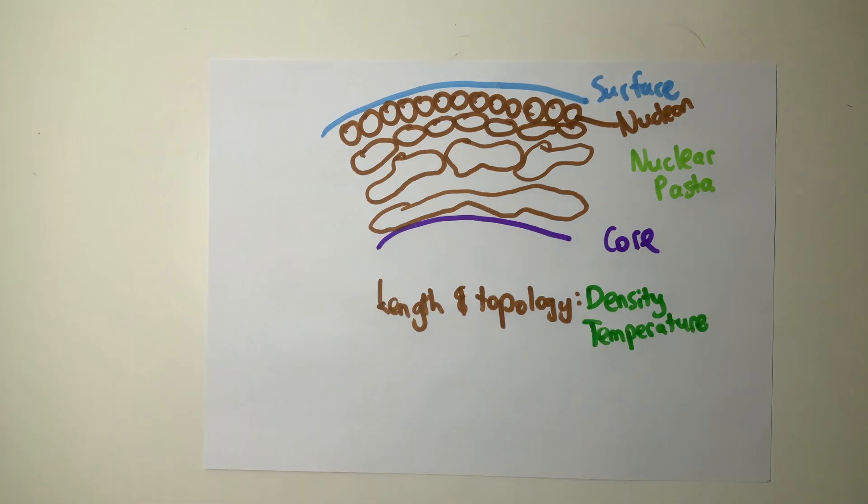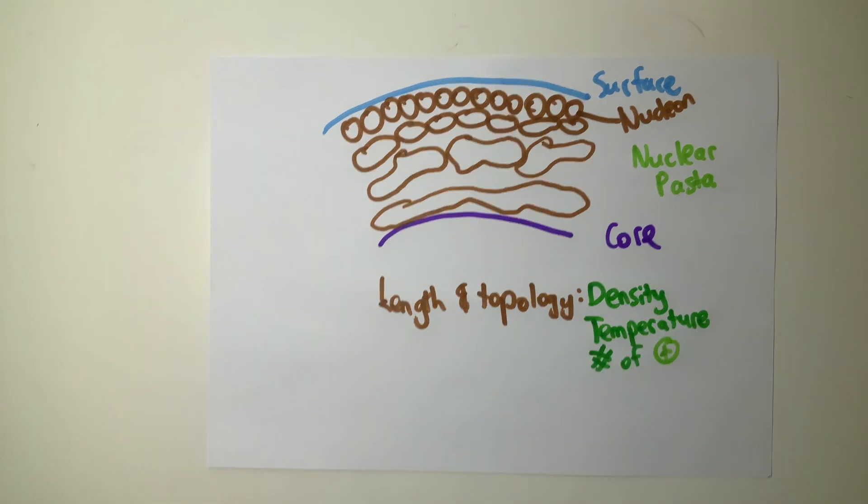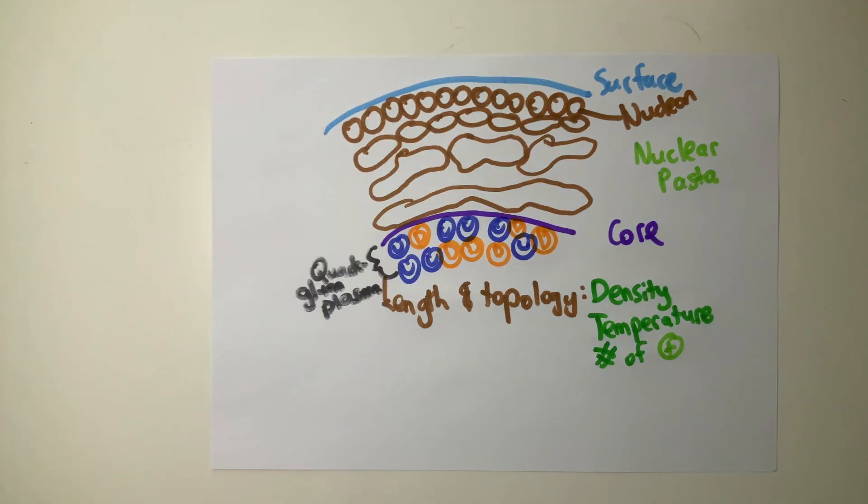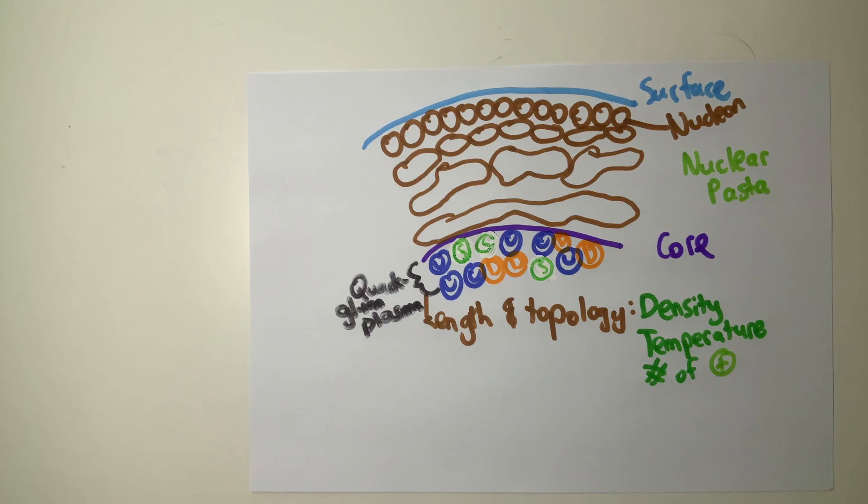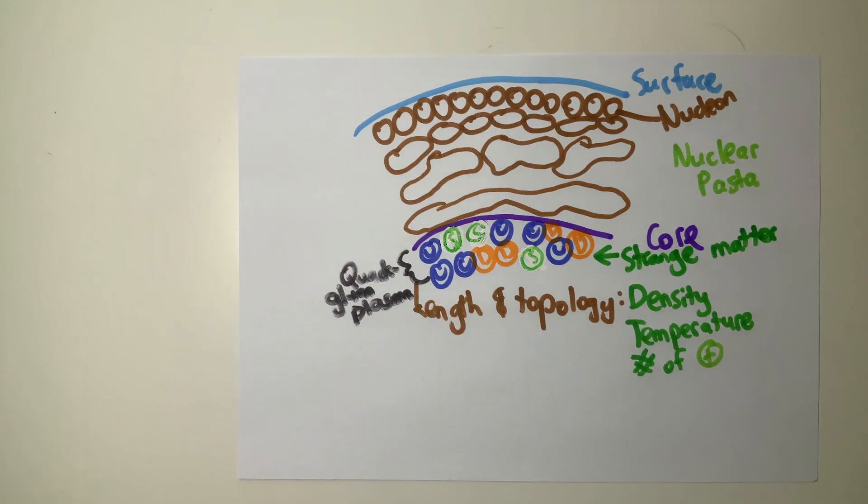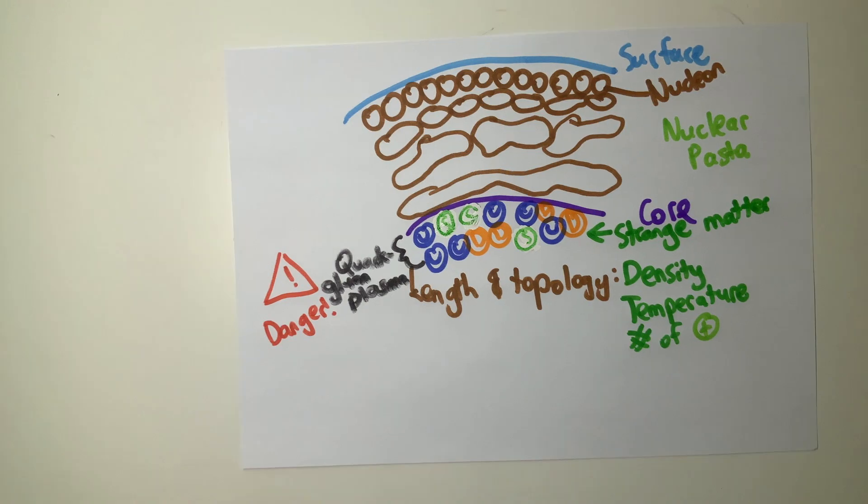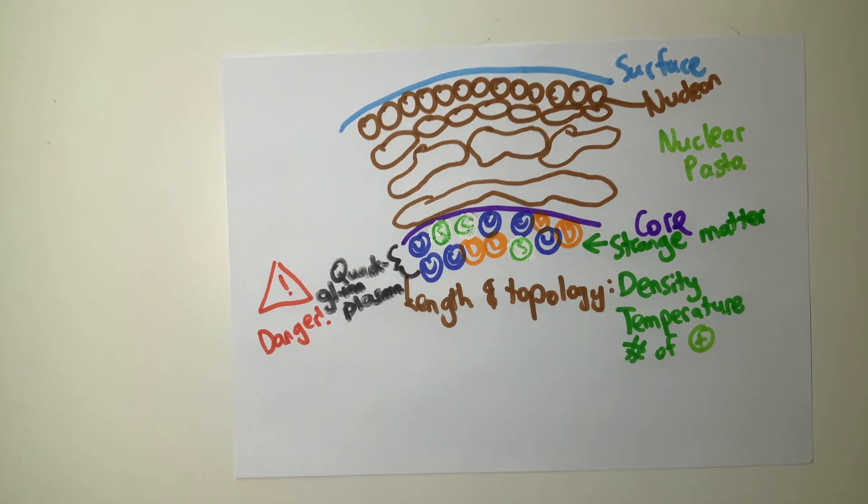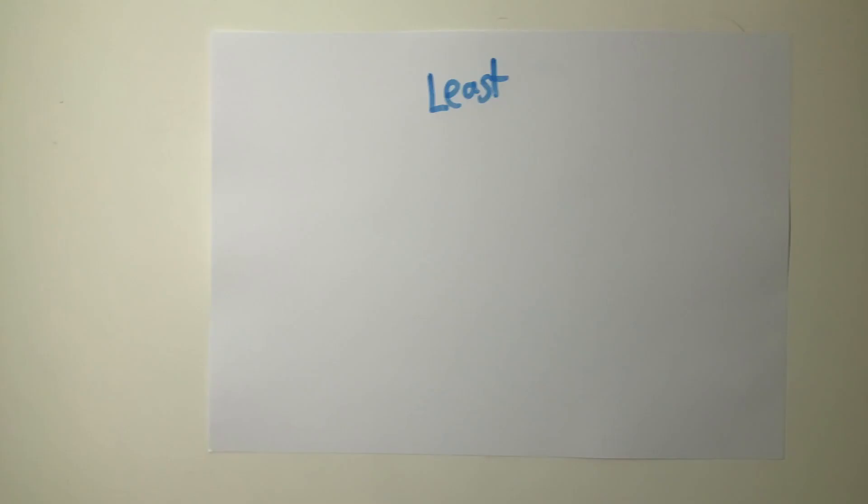Physicists recently discovered that the length of topology of nuclear pasta depends on the density of the neutron star, the temperature of the star, and the number of protons. At the core of neutron stars, if the pressure becomes great enough, the quark-gluon plasma can begin to turn into strange matter, a degenerate matter composed of a type of quark known as strange quarks. Strange matter is really threatening.